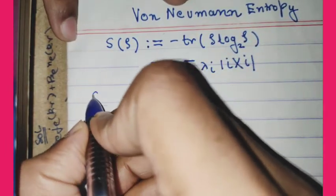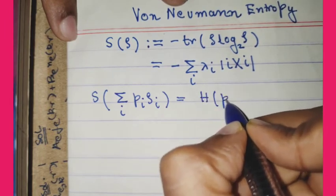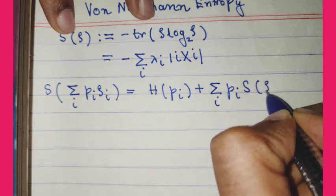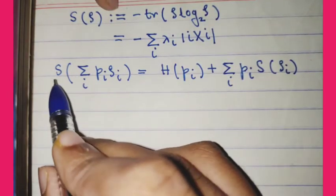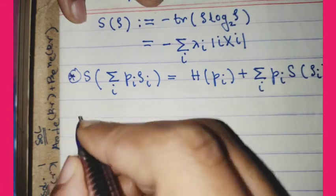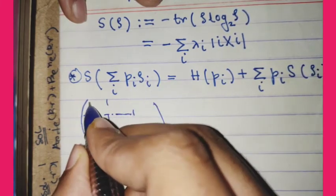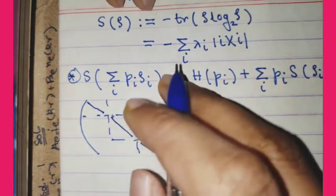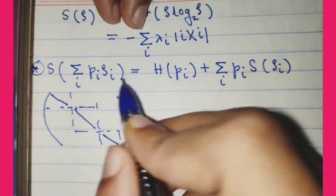The first important property is: S of summation over i pi_i rho_i equals H of pi plus summation over i pi_i times S of rho_i. This result is only valid for states which have orthogonal support, meaning the matrices form a block diagonal structure. If we diagonalize rho_1, rho_2, rho_3, each occupies its own block, so the entire matrix is itself block diagonal — this is what we call orthogonal support.